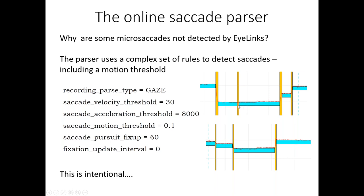If the iLink parser were to detect all of these fixational movements, then you would have an inflated estimate of the number of actual fixations, and your average fixation duration measure would be artificially reduced because you'd have lots of short fixations rather than the expected number of normal duration fixations. So it's by design that the iLink parser does not pick up all of these saccades. It will pick up saccades that would count as microsaccades by most definitions, but if you want to employ a systematic approach to detecting microsaccades, then it's typical to use some alternative parsing technique such as the Engbert and Kliegl algorithm.